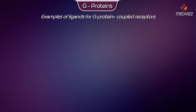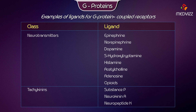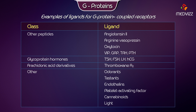Examples of ligands for G-Protein coupled receptors: Neurotransmitters include epinephrine, norepinephrine, dopamine, 5-hydroxytryptamine, histamine, acetylcholine, adenosine, and opioids. Tachykinins include substance P, neurokinin A, and neuropeptide K. Other peptides include angiotensin II, arginine vasopressin, oxytocin, vasoactive intestinal peptide, gastrin-releasing peptide, thyroid-stimulating hormone, and parathyroid hormone.